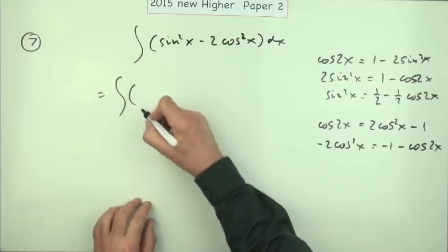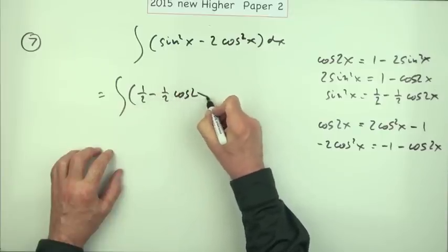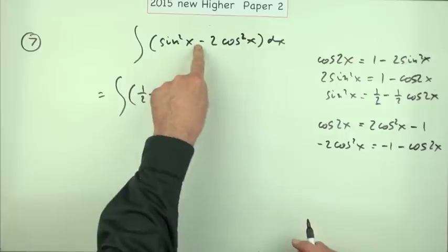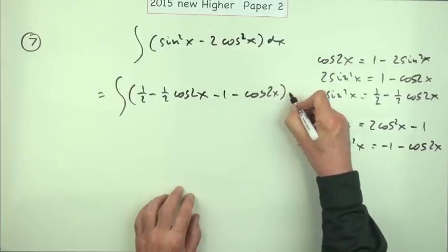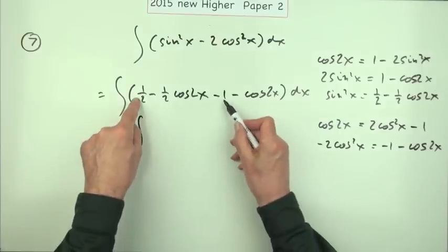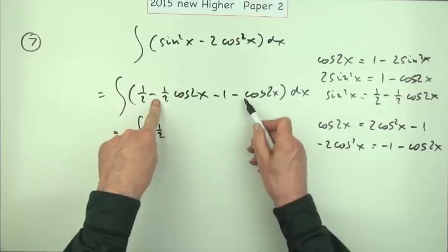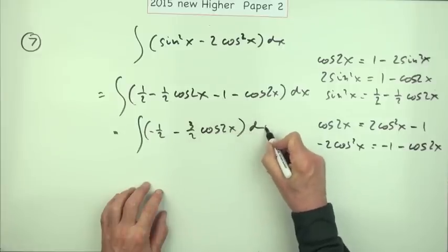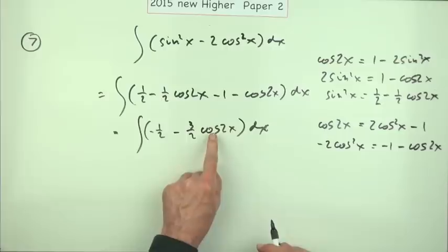So sin squared x could be replaced by a half minus a half cos 2x, and I'm not subtracting an expression because that's what I've got. This whole expression, negative 2 cos squared x, is minus 1 minus cos 2x. Just tidy it up. A half minus 1 is negative a half. Negative a half minus another 1 is minus 3 upon 2.